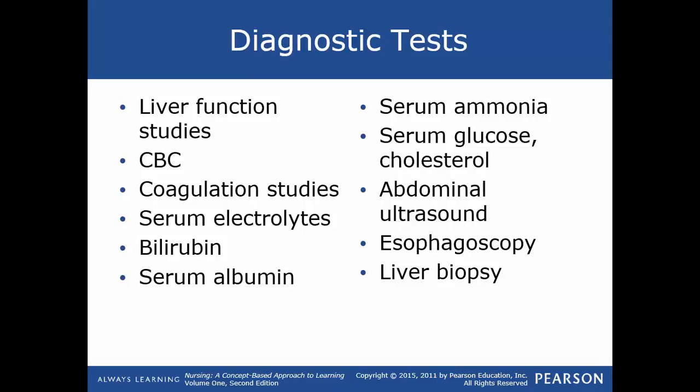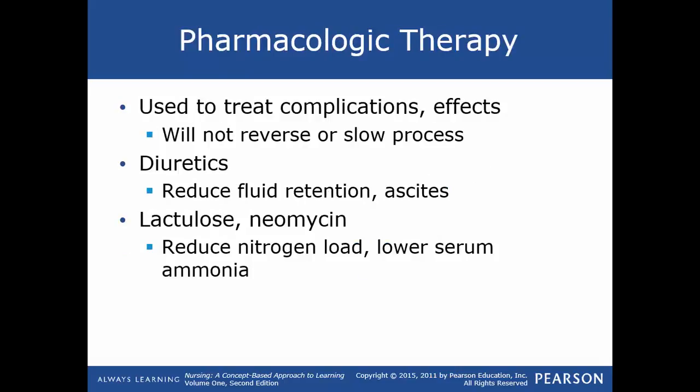Regarding serum electrolytes: hyponatremia is common, usually from hemodilution. Hypokalemia, hypophosphatemia, and hypomagnesemia are usually related to malnutrition and altered renal excretion of those electrolytes.